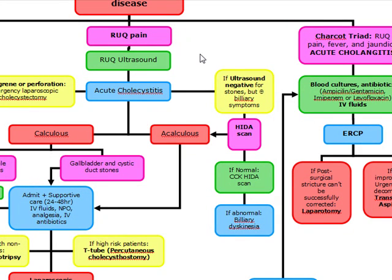On the right upper quadrant sonogram, we're going to see gallstones, a thickened gallbladder, and pericholecystic fluid, which is going to confirm our acute cholecystitis. If our ultrasound is negative but they still have these biliary-type symptoms, we're going to do a HIDA scan.